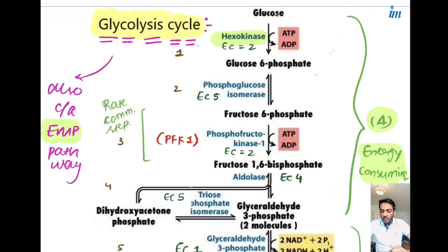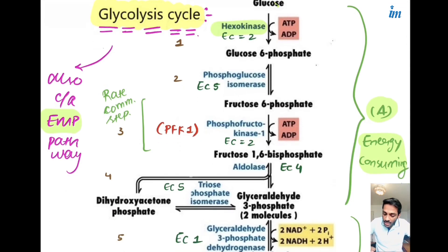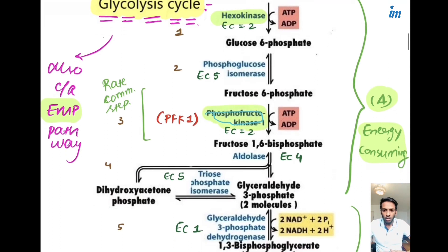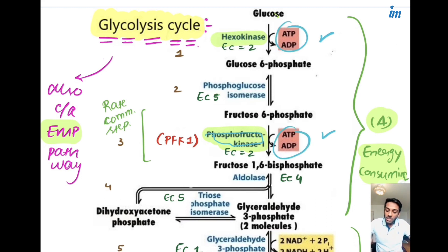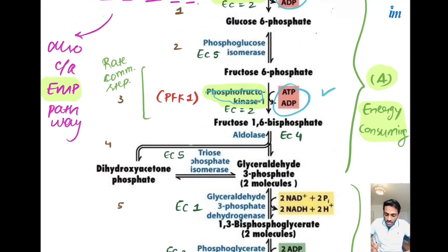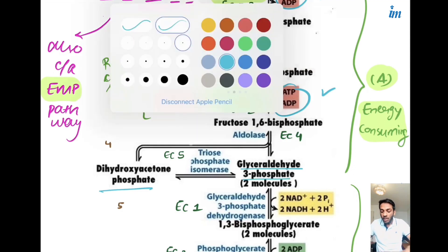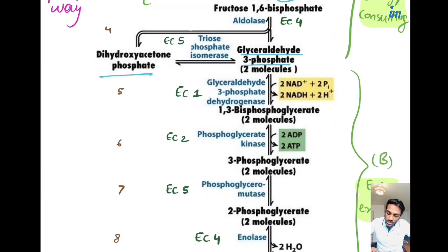The second important step is fructose-6-phosphate being converted to fructose-1,6-bisphosphate, where the enzyme is phosphofructokinase (PFK) with EC number 2. In the energy consuming phase, note that in the first and third steps we spend energy in the form of ATP. The last products of the energy consuming phase are two molecules: DHAP and glyceraldehyde-3-phosphate, which will be further converted in the following steps.